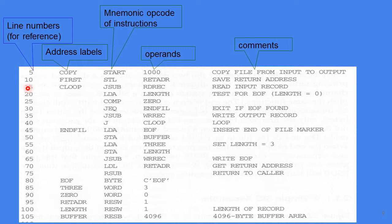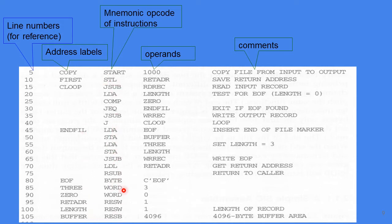The assembly language program has several columns. The first column is line numbers, just for user reference with no extra meaning. Next are address labels or symbols — similar to the label used in a 'goto' statement in C programming. Then come the mnemonic operation codes, which are specific to the SIC architecture. Next are the operands that come with each instruction, and finally comments describing what each instruction does.